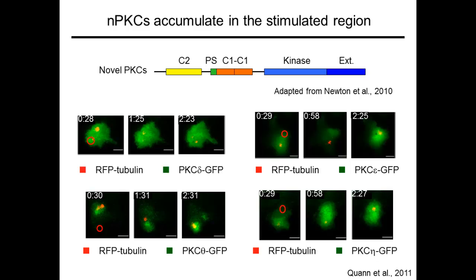Shown here are time-lapse montages of photoactivation experiments in which we are watching labeled forms of each novel PKC by TIRF microscopy together with the MTOC. As you can see, localized TCR stimulation induces the recruitment of PKC epsilon, PKC eta, and PKC theta prior to MTOC reorientation.